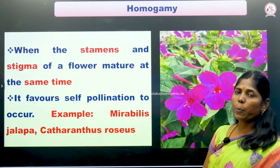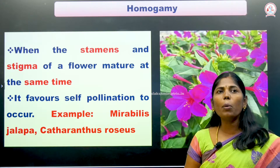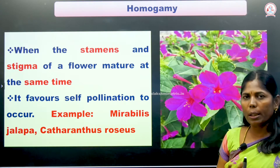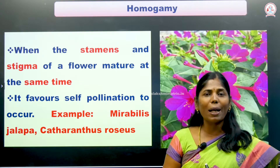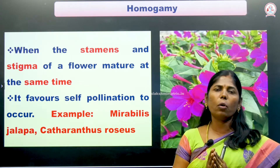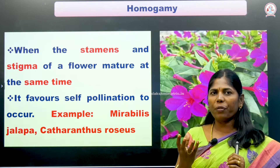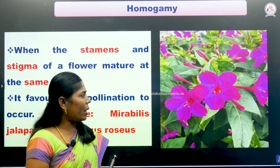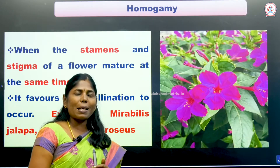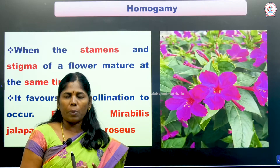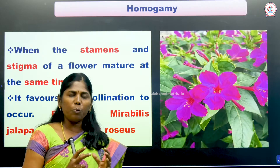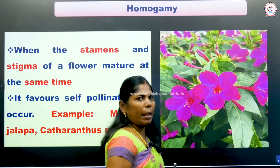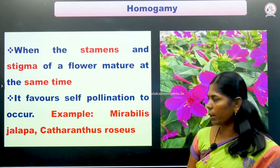Another character promoting self-pollination is homogamy. In homogamy, the essential organs — male and female sex organs — mature at the same time. This promotes self-pollination. Examples are Mirabilis jalapa and Catharanthus roseus.